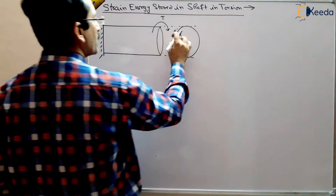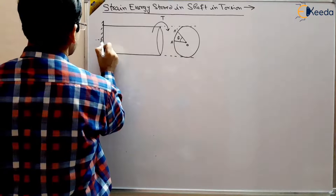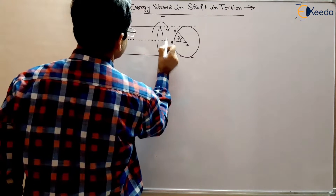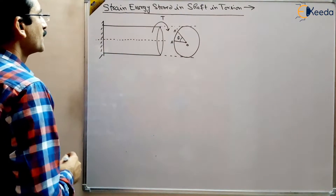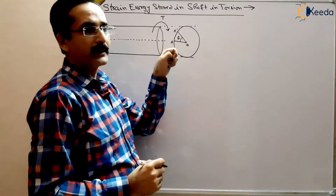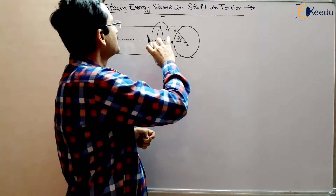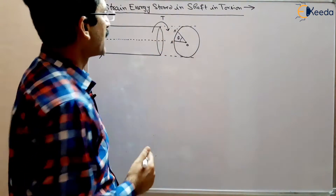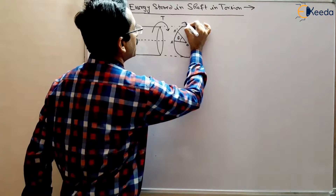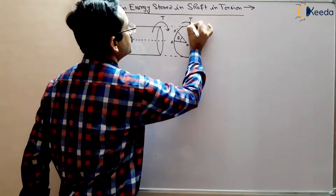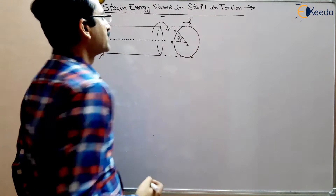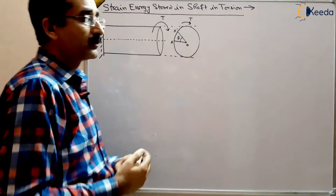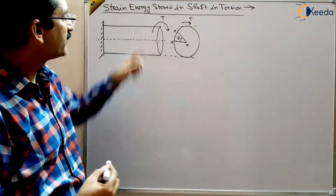Suppose from A to A dash. For a given torque applied, what is the shear strain energy stored in this shaft when we are applying a torque T? When the torque is applied to the shaft, what is the strain energy stored? And what will happen if we increase the torque?